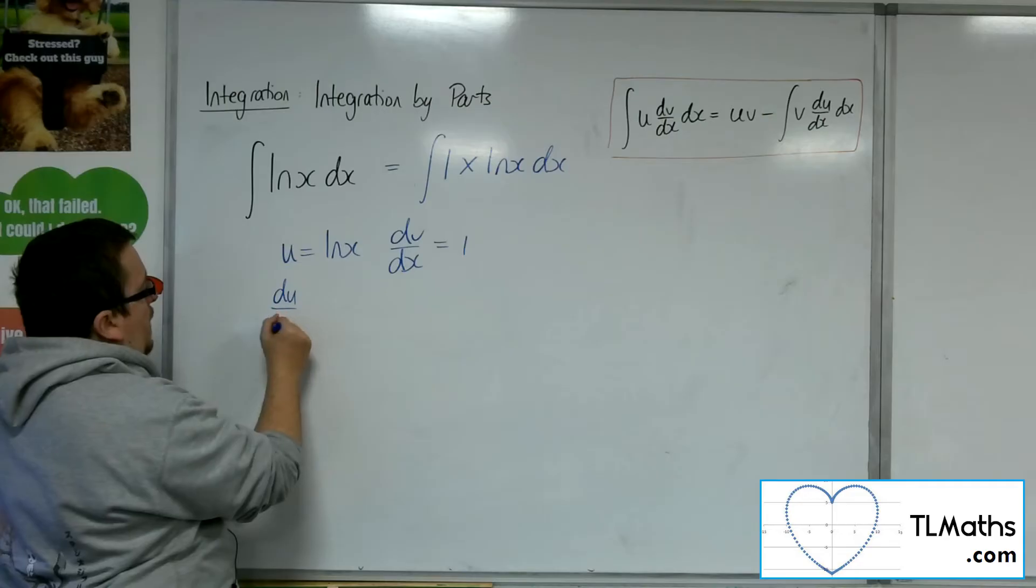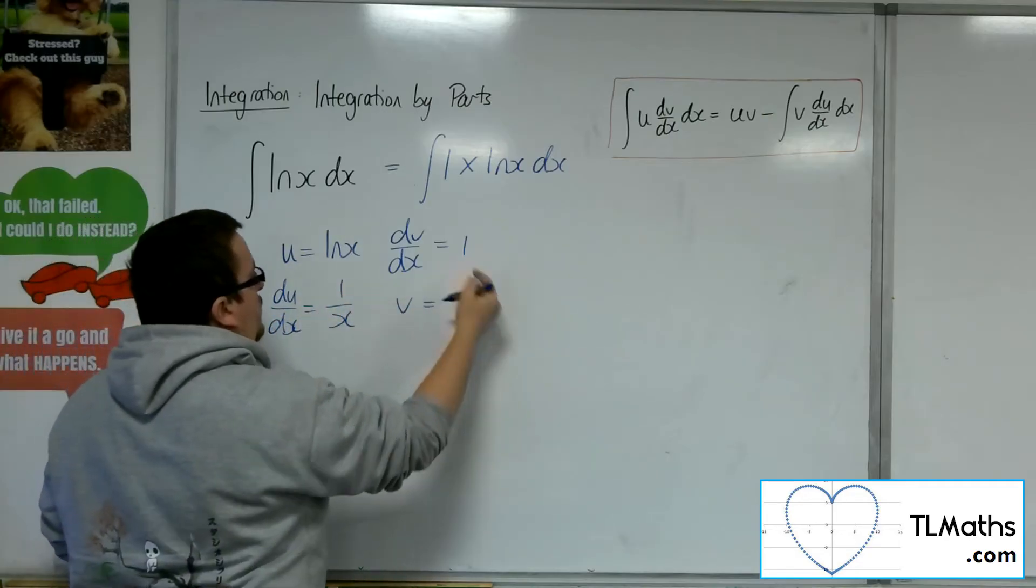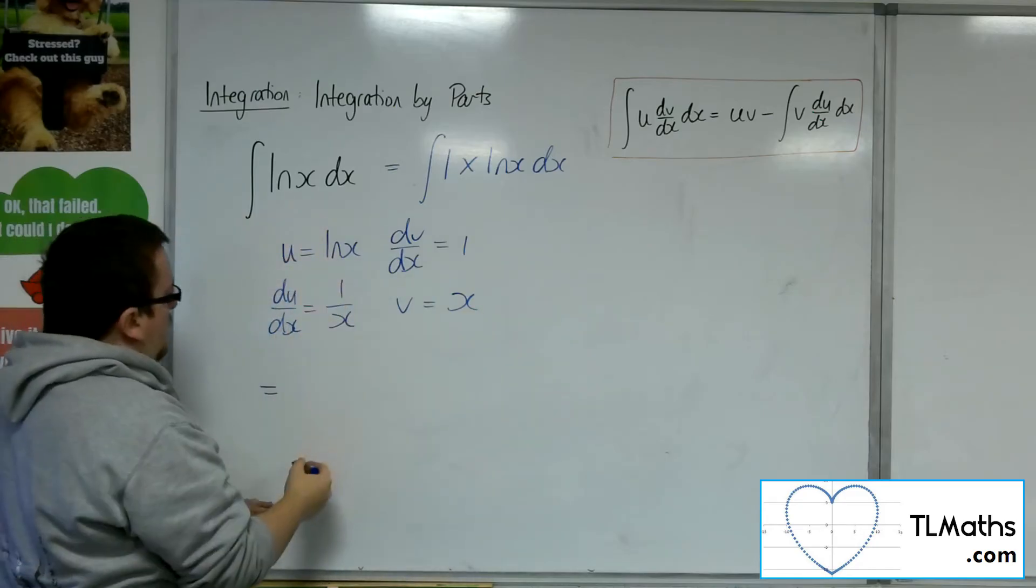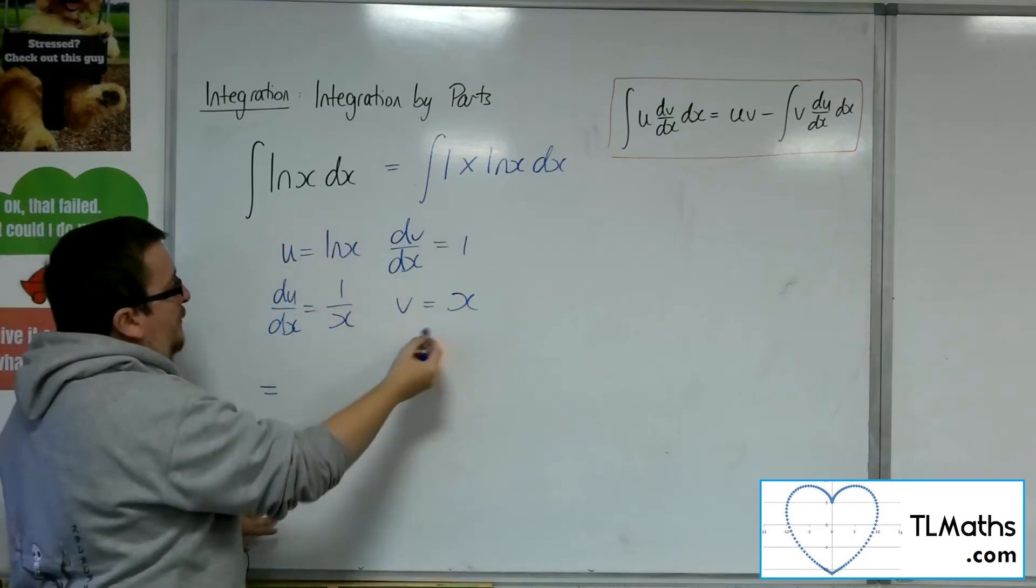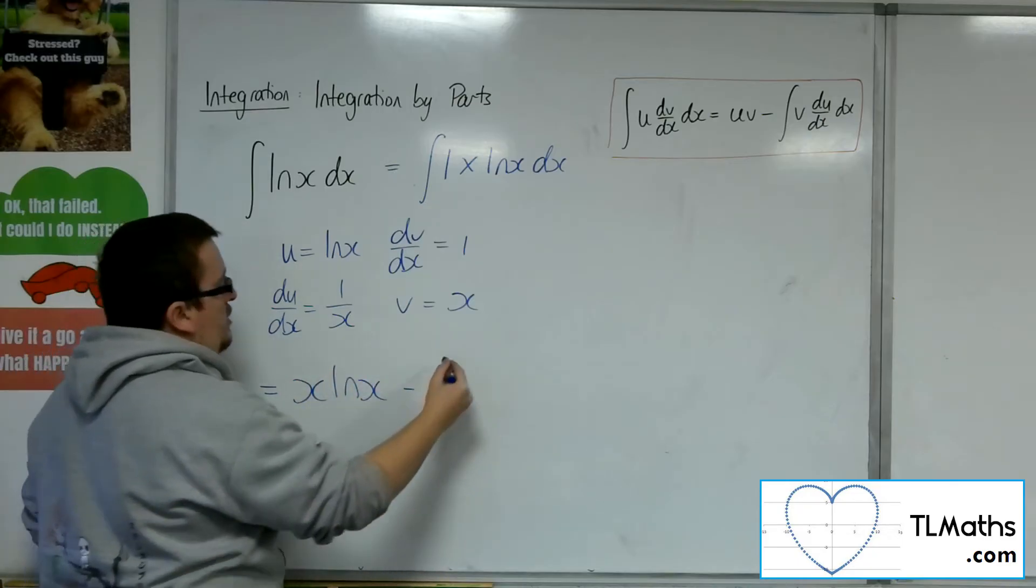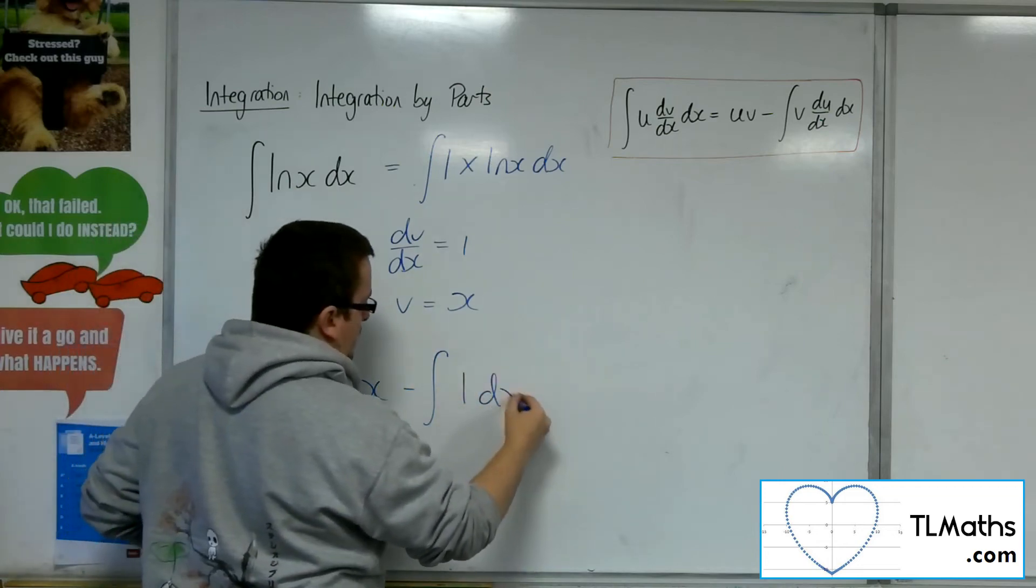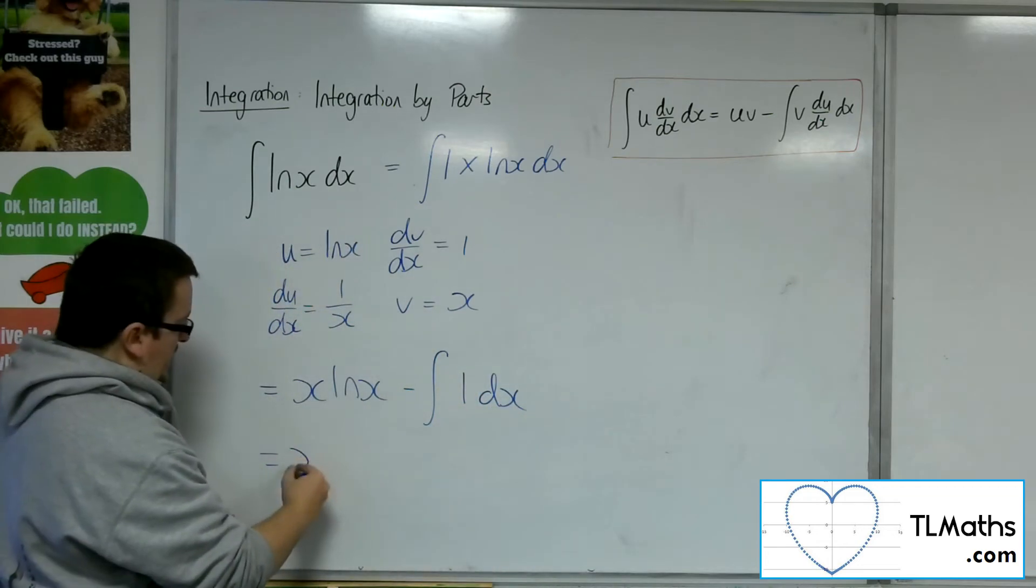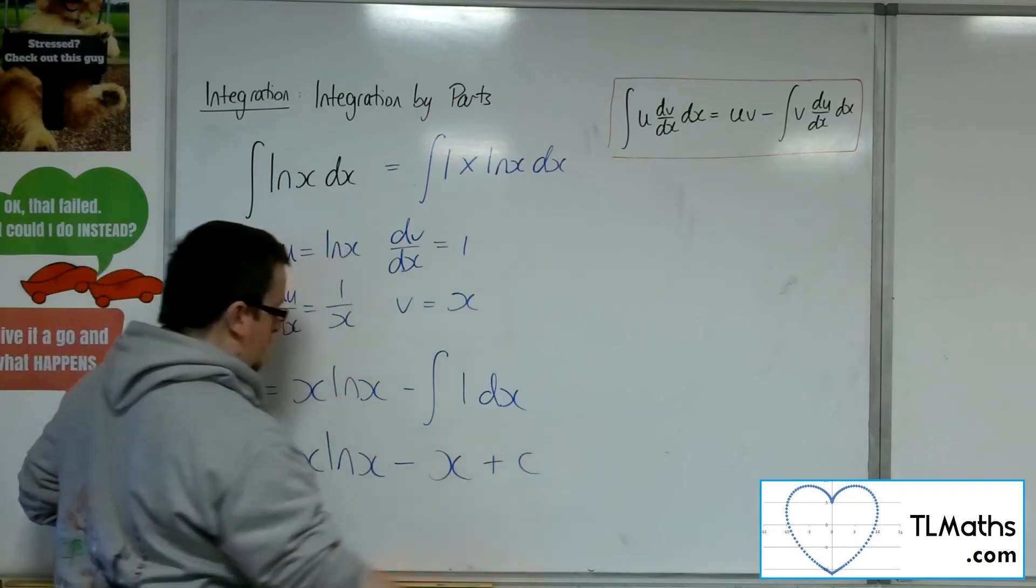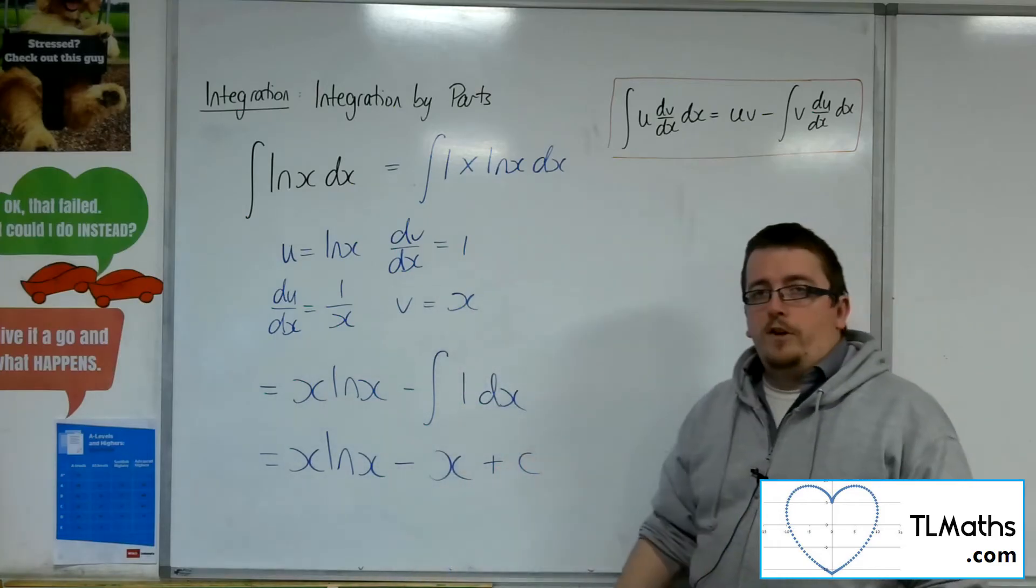So I can find du by dx, which is just 1 over x, and v, which is the integral of 1, so just x. So log x will integrate to u times v, so x log x, take away the integral of v times du by dx. Well, x times 1 over x is just 1. So this is x log x, take away x, plus c. And so that is the integral of log x.